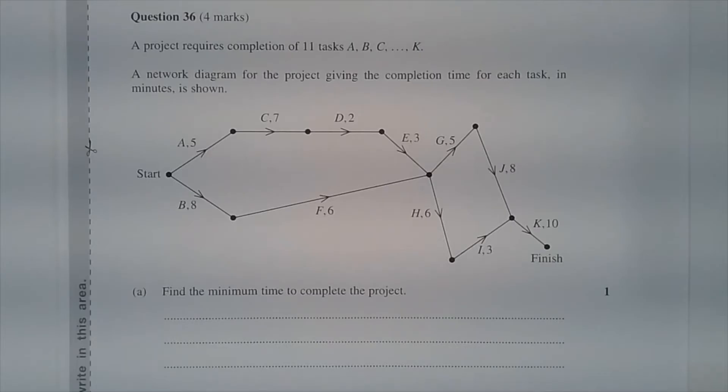Question 36. A project requires completion of 11 tasks A, B, C through to K. A network diagram for the project giving the completion time for each task in minutes is shown. Part A: Find the minimum time to complete the project.